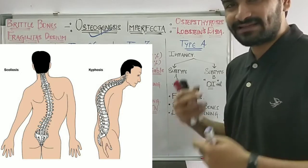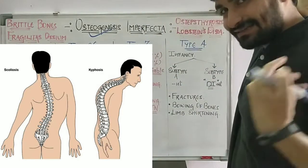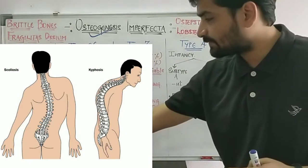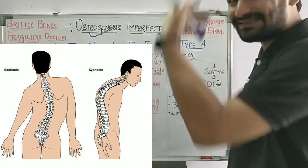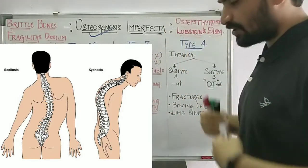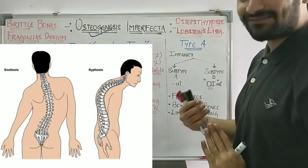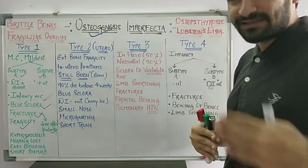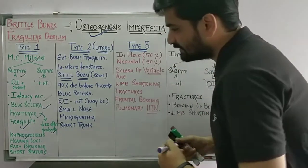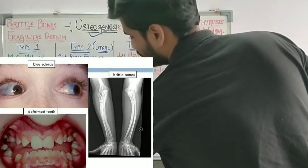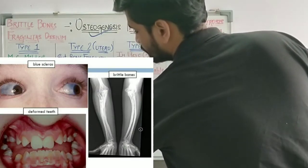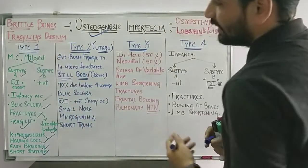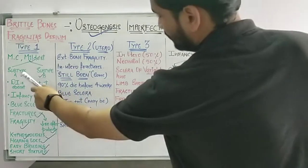Kyphoscoliosis is a combination of kyphosis and scoliosis, meaning improper curvature of the spine — both posterior and sideways. In the coronal as well as the sagittal plane, there is curvature of the spine. There is also hearing loss, easy bruising, and short stature. These are the clinical features of Type 1, with subtypes A and B.